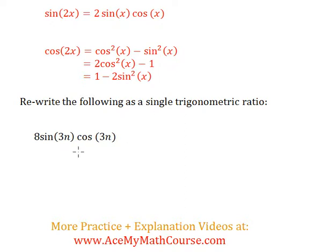So 8 sin 3n cos 3n. If I look at this, I recognize that it looks like 2 sin x cos x the most. But I have an 8 here instead of a 2, so I'm just going to break the 8 down. I will rewrite it as 4 times 2 sin 3n cos 3n.